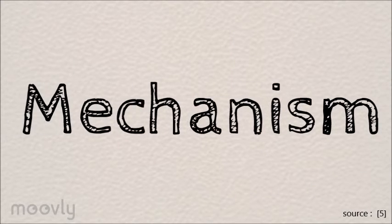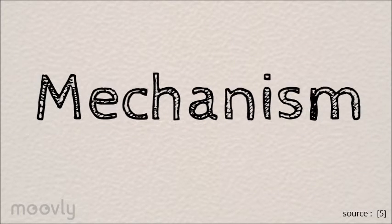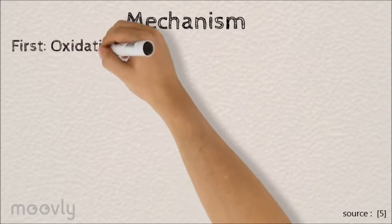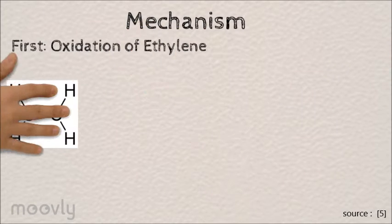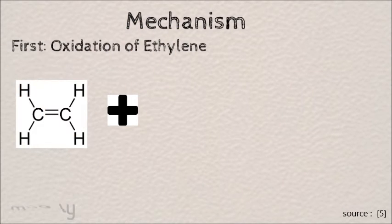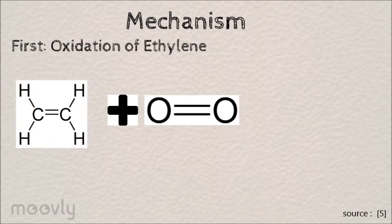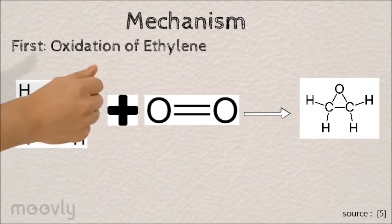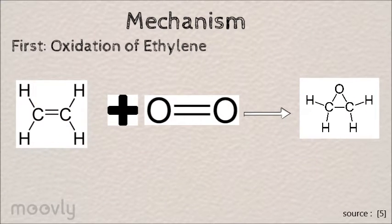The mechanism of the process is as follows. First is the oxidation of ethylene. The carbon-carbon double bond breaks to form a bond with oxygen in the presence of a silver catalyst to form ethylene oxide.